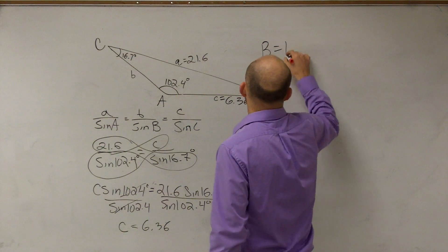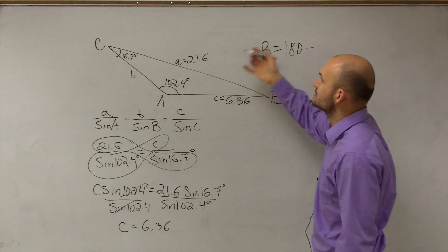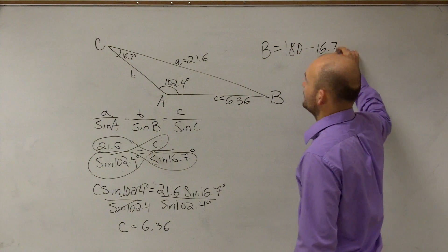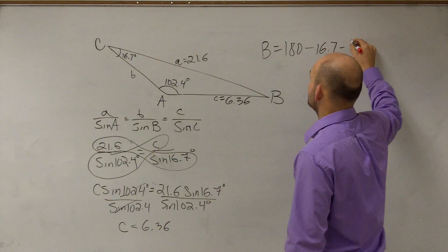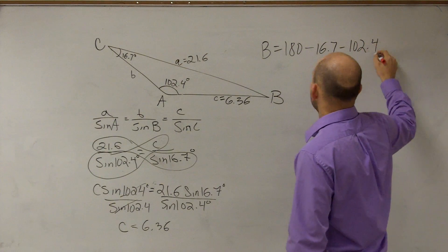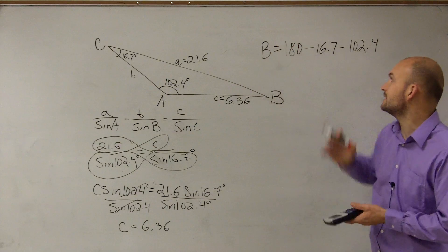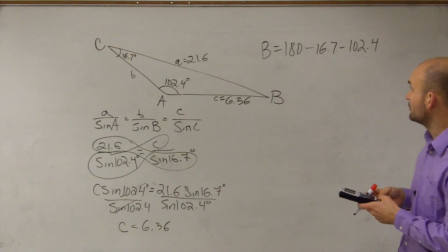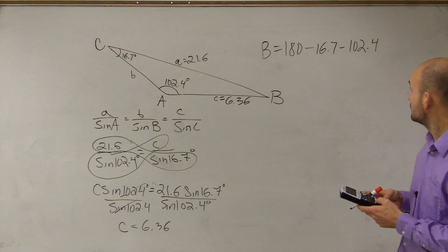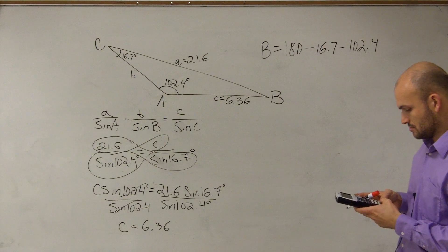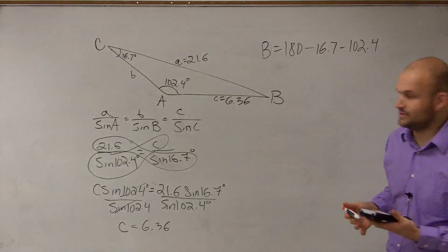But we know by using the sum of angles in a triangle that B is equal to 180 minus the value of C, which is 16.7, minus the value of A. Because we know that A plus B plus C equals 180, so we subtract them from 180 to solve for B. So let's find the value of B. What is it? 60.9.